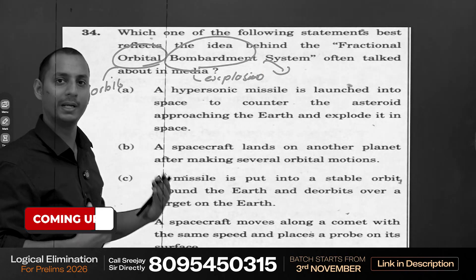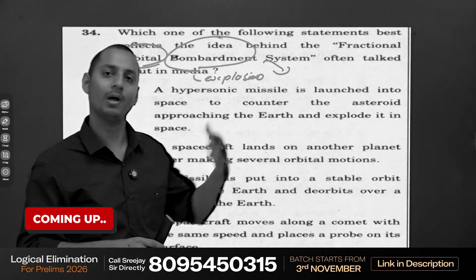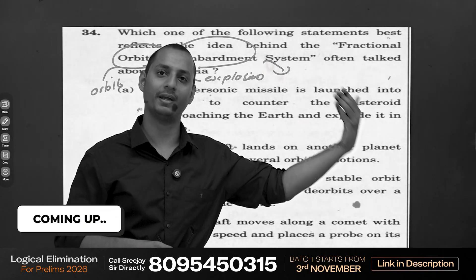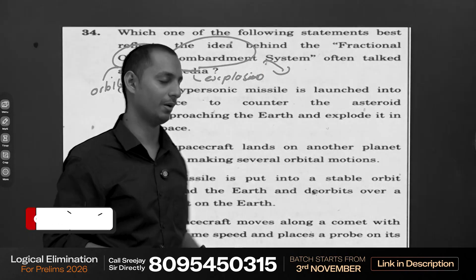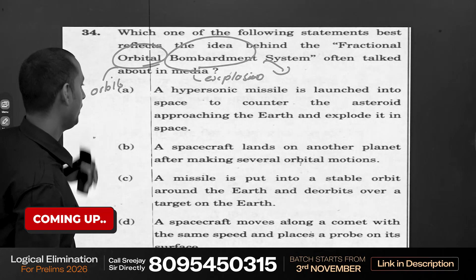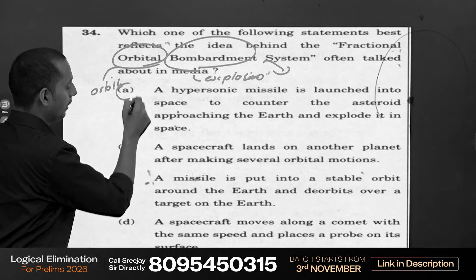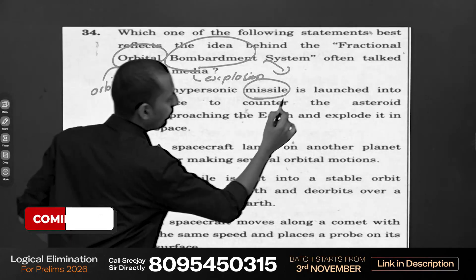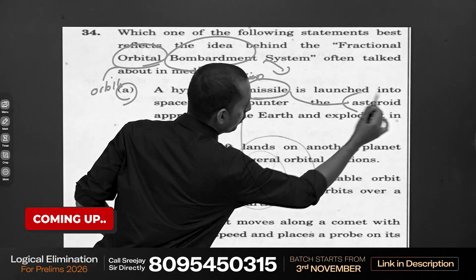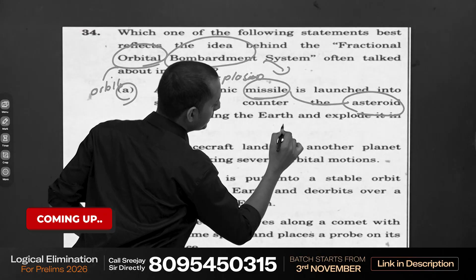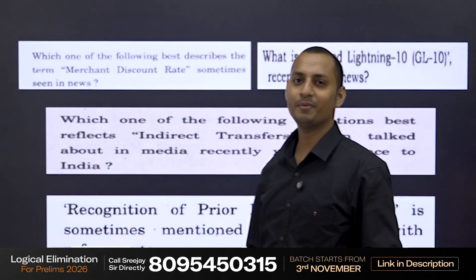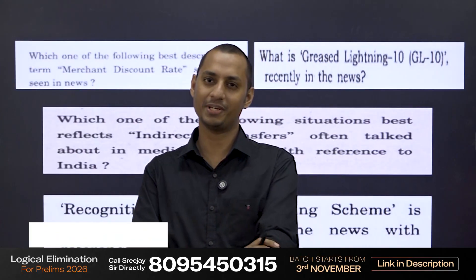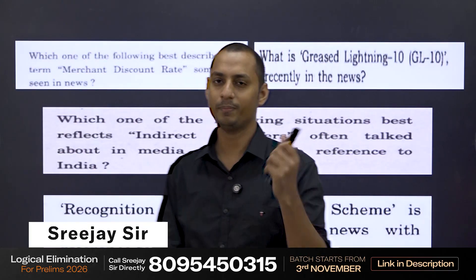After you have made a general meaning in your mind, now go for simplifying the options which have been asked. Now option A talks about a missile to explode the asteroid and save the earth. Hi everyone, Srijay here.